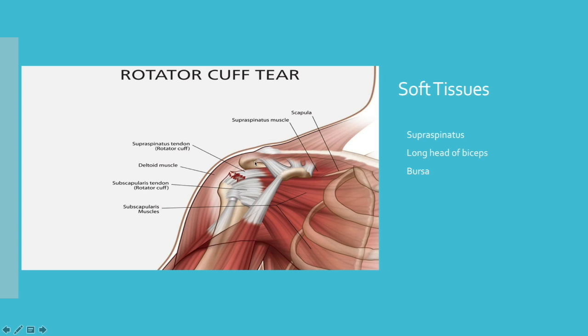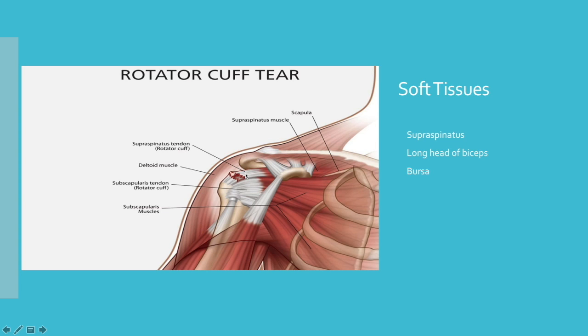Now, in the subacromial space, you can see a little bit more here, which again is this space right here. We have a couple of important structures. We have the supraspinatus tendon, which you can see right here. There's a picture of the tendon that's torn. I think it's important to understand when you have a rotator cuff tear, it's actually of the tendon itself, and it's not going to be of the muscle belly per se, and that's a common misunderstanding. The next one is going to be the long head of the biceps, which you can see comes across right through here, just like this. We also have a bursa, and that's not depicted, but it's also right in this area. And those are the soft tissues that are important in subacromial impingement syndrome.